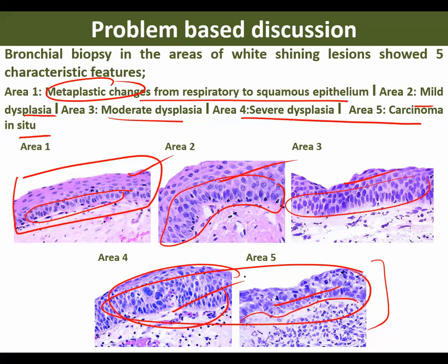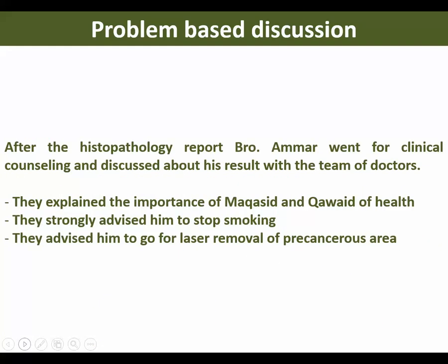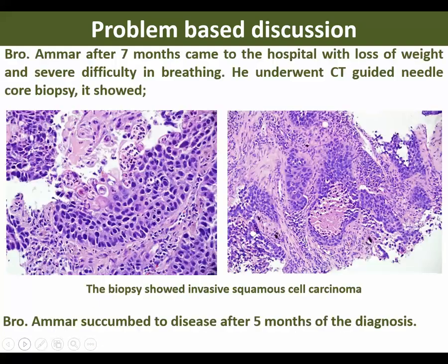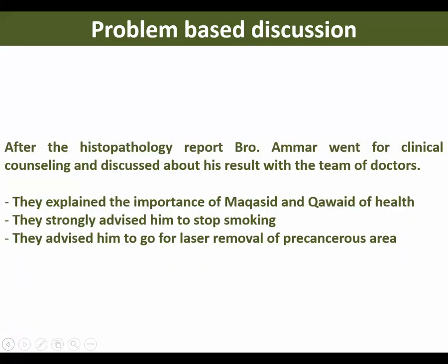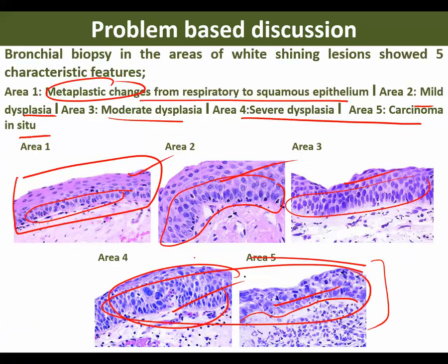In carcinoma in situ, the basement membrane is intact — no cell is coming out. What happens next is it completely comes out and spreads — it is invasive squamous cell carcinoma. You should know the difference between invasive squamous cell carcinoma and carcinoma in situ. The only difference is the basement membrane.